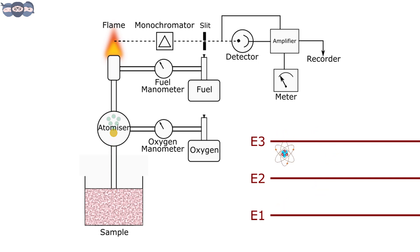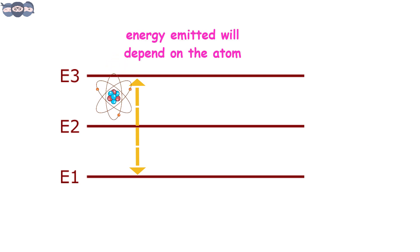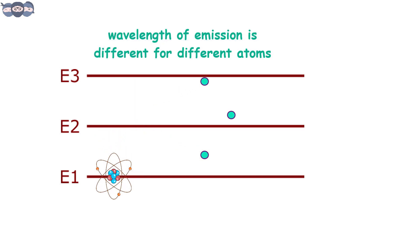The energy is released in the form of photons. These are atomic emissions. The analysis is performed by studying these emissions. As discussed earlier, the different atoms will have different energy levels. Hence, the energy emitted by atoms will also be different for different atoms. The emissions will have different wavelengths.